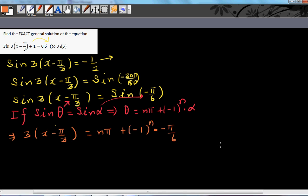So what can we do now? I'm going to divide the whole thing by 3 now. So this implies x minus pi by 3. We want the exact and general solution. So this will be n pi by 3. Now this will be plus negative 1 raised to n times negative pi by 18. Negative pi by 18, you're dividing by 3.